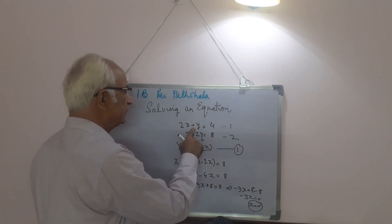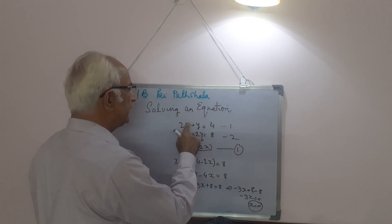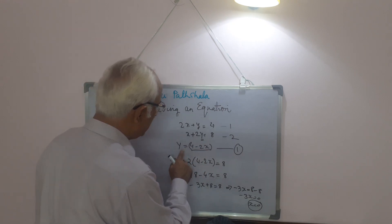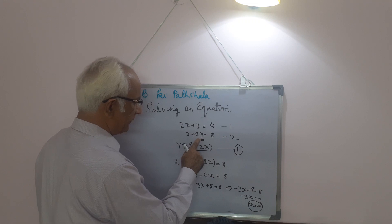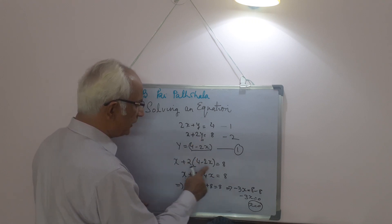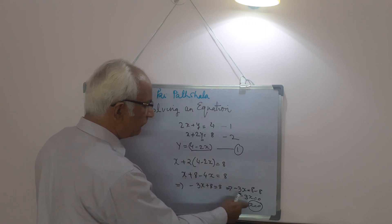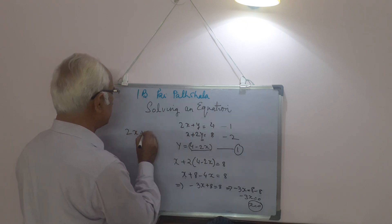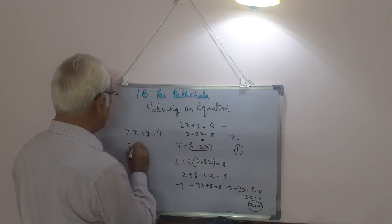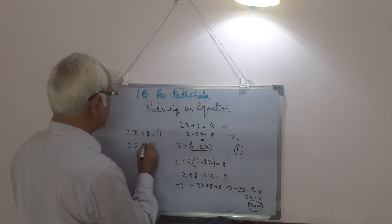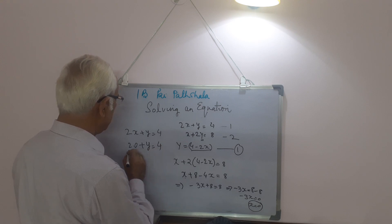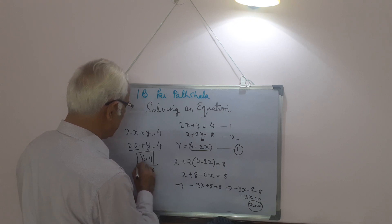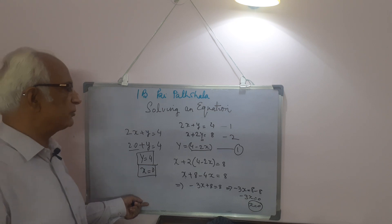We used equation 1 to find the value of y in terms of x as 4 minus 2x, and put that into the second equation, making it an equation in one variable. Solving it gave us x equals 0. Now we put this value into the first equation: 2 times 0 plus y equals 4, so y equals 4. These are the values of both variables.